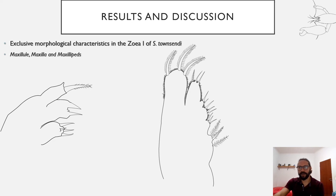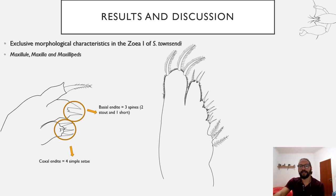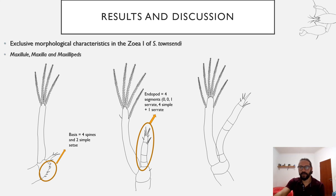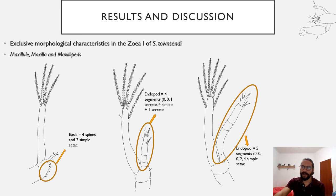The exclusive morphological characteristics were found in the coxal endite of the maxillule with four simple setae, the basal endite of the maxillule with three spines — two stout and one short — and the basal endite of the maxillule with three plus three simple setae. Also, the basis of the first maxillipeds with four spines and two simple setae, the endopod of the second maxillipeds with four segments with uncinate setae in the third segment and four simple and uncinate in the fourth segment, and the endopod of the third maxillipeds with five segments, with two simple setae in the fourth segment and four simple setae in the fifth segment.